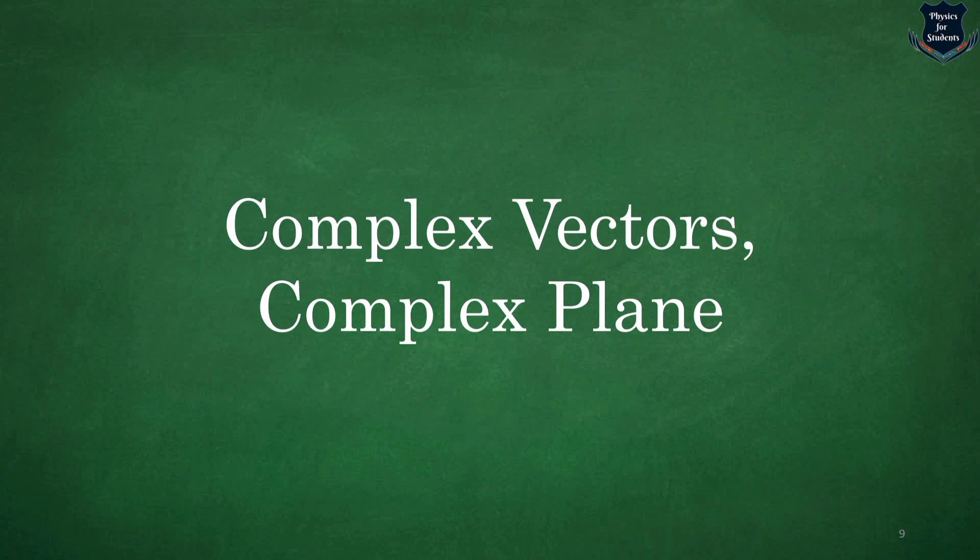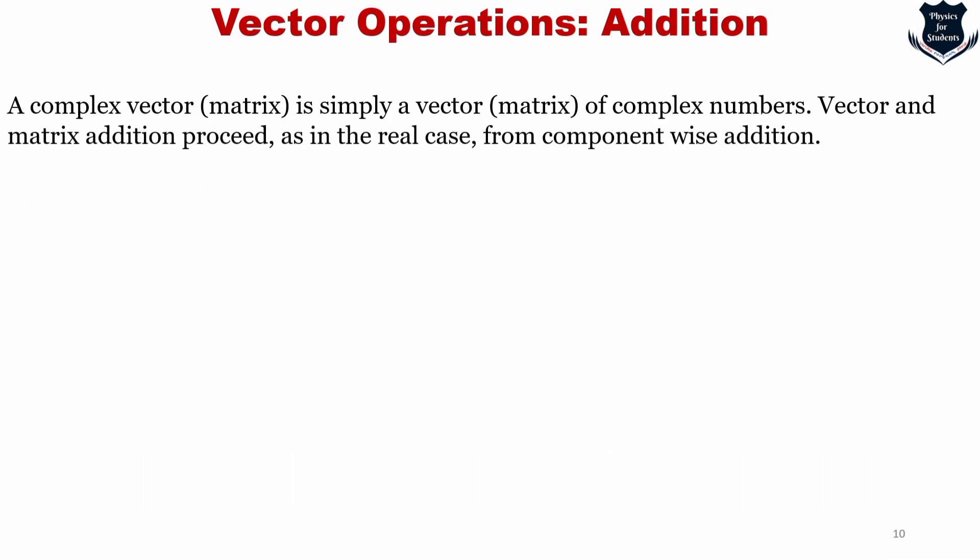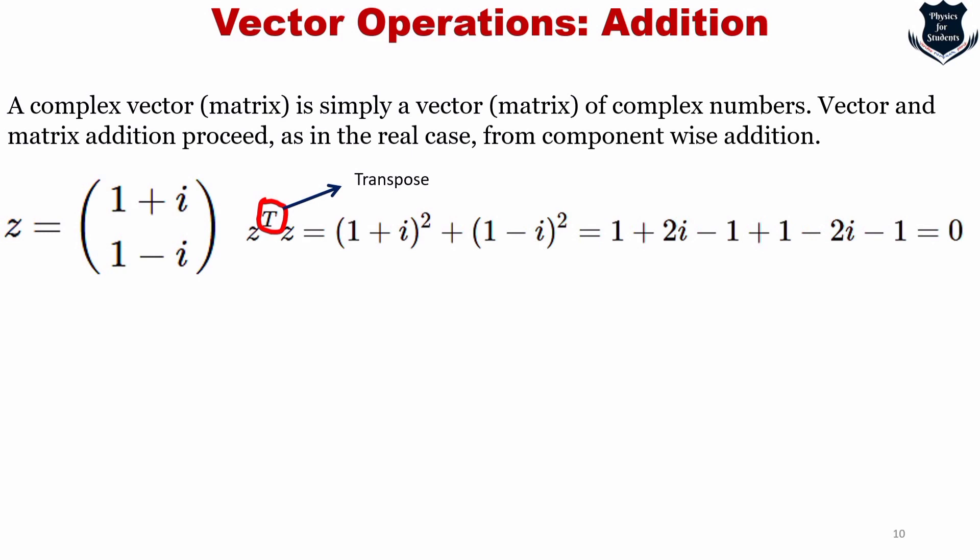Quantum mathematics always deals with the complex plane, so we need a clear understanding. A complex vector is simply a vector — a matrix of complex numbers. Vector and matrix addition proceed component-wise as in the real case. The inner product of two complex vectors requires a little modification. For example, z = (1 + i, 1 - i), and we introduce the transpose notation when computing its length.